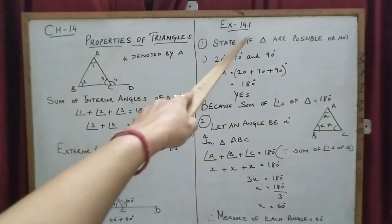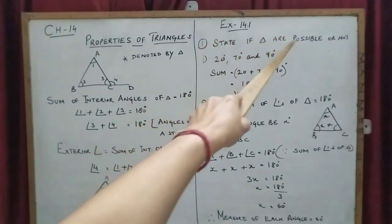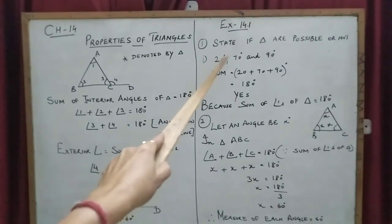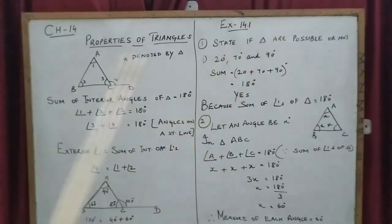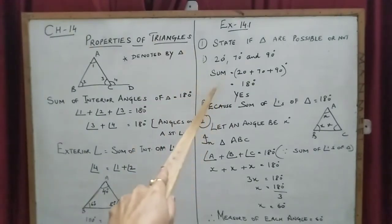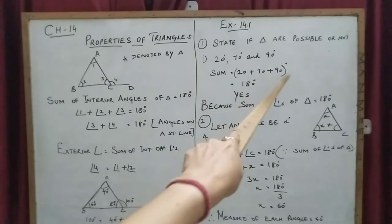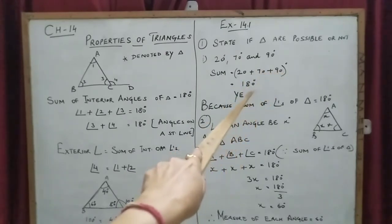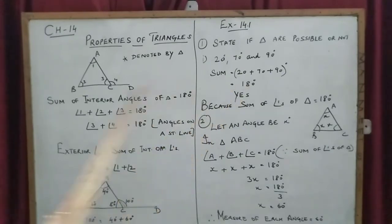Now open your books to Exercise 14.1. The first question: state if triangles are possible or not. The three angles given are 20 degrees, 70 degrees, and 90 degrees. We find the sum: 20 plus 70 equals 90, and 90 plus 90 equals 180. The answer is yes.